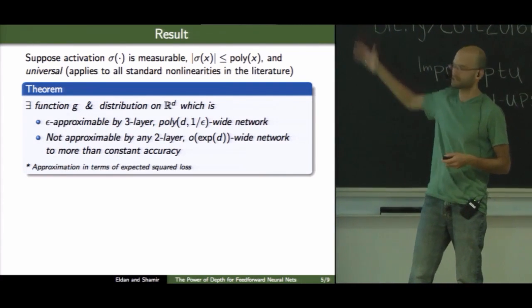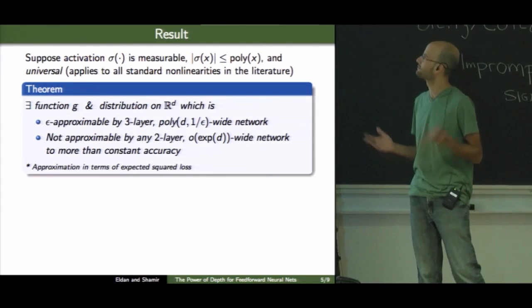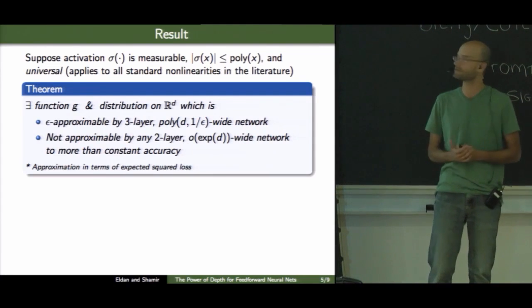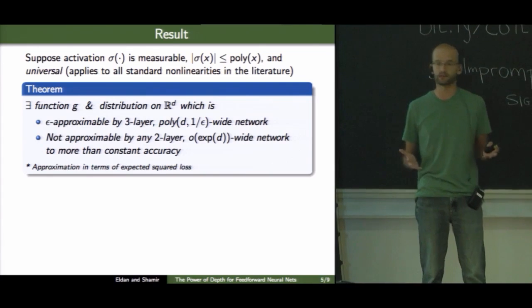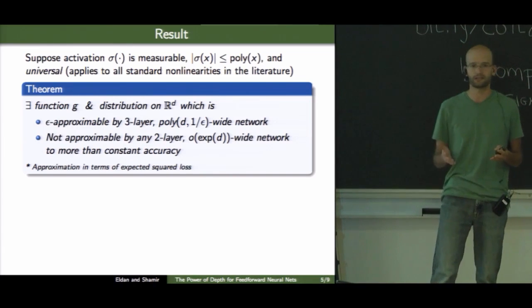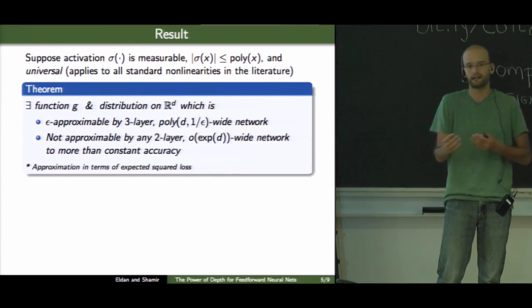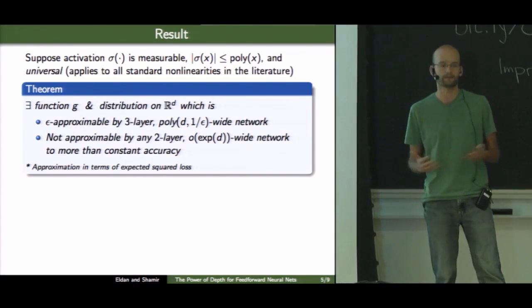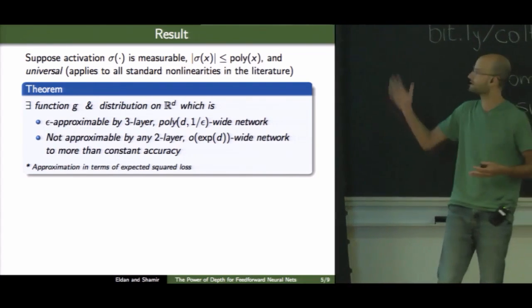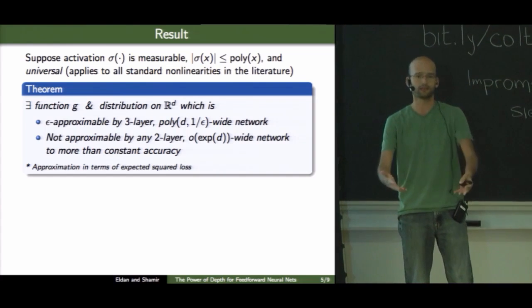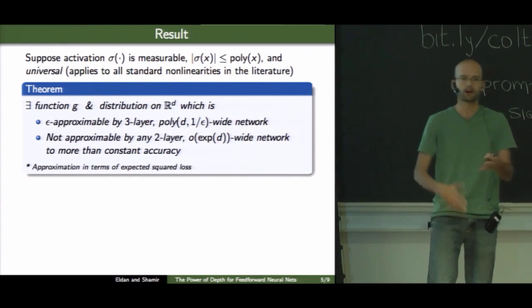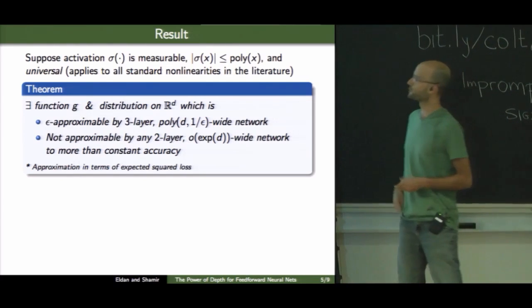This is an assumption satisfied by all activations in the literature I'm familiar with. And it's also necessary because if the activation is, say, just a linear function, which is not universal, then it's impossible to prove any kind of depth separation result. If the activation is identity, what the network computes is just a linear function regardless of its depth.